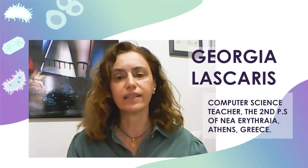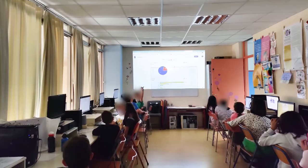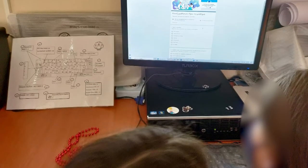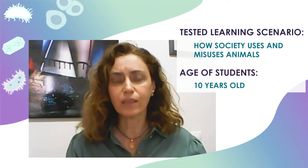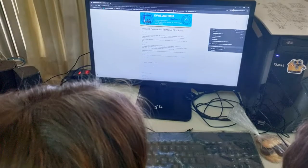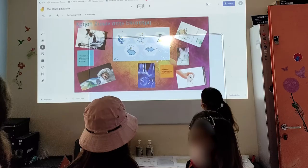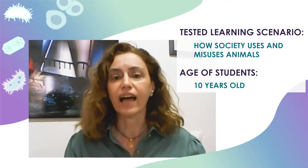I implemented the 3Rs learning scenario within the subjects of ICT and Environmental Studies in line with the Greek National Curriculum of Primary Schools. It was the first time I introduced the 3Rs topic to students, who were a bit surprised and uncomfortable at the beginning, because they had never thought about the different ways animals are used and misused in our societies. But through the activities, discussions and feedback, they realized the responsibility towards animals and the choices they can make to improve animal welfare.